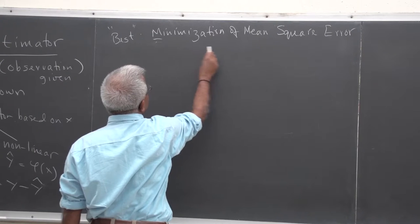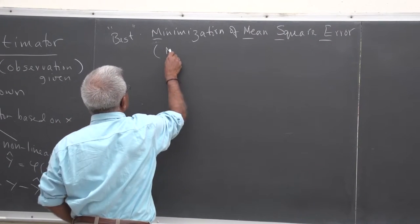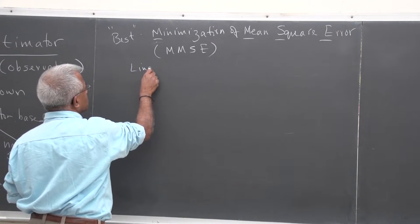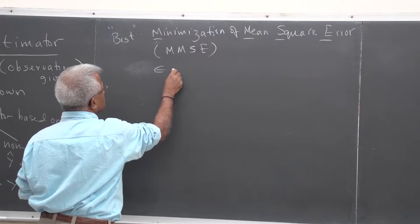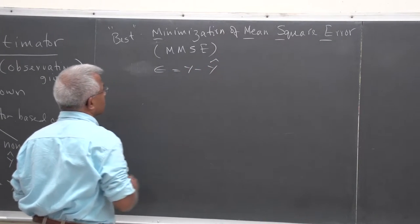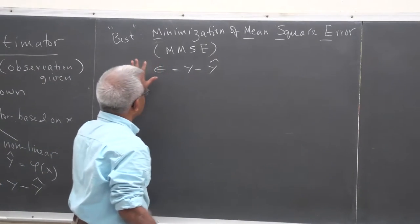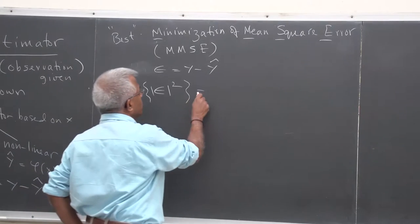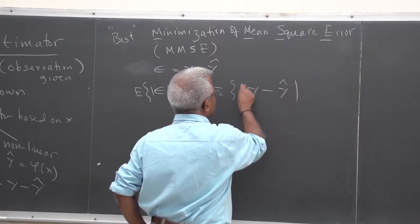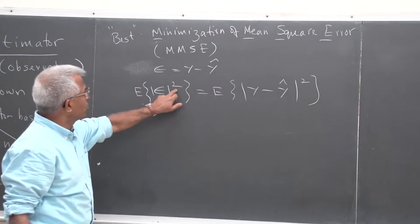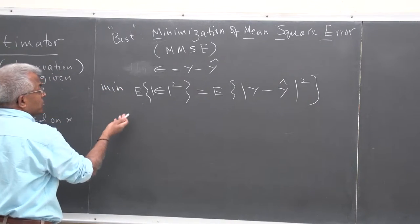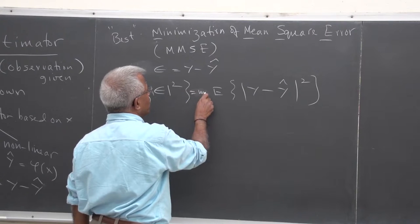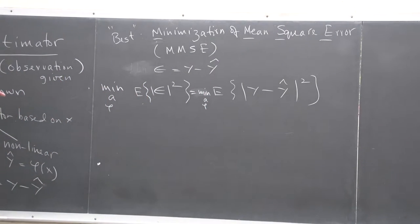That's what we mean by best — the MMSE criterion. The criteria for best is defined as minimization of mean squared error. In the linear case the error is y minus y-hat. We square the error and take the expected value: E[epsilon²] = E[(y − y-hat)²]. This minimization, depending on the linear or non-linear case, is either over a or over the phi function.